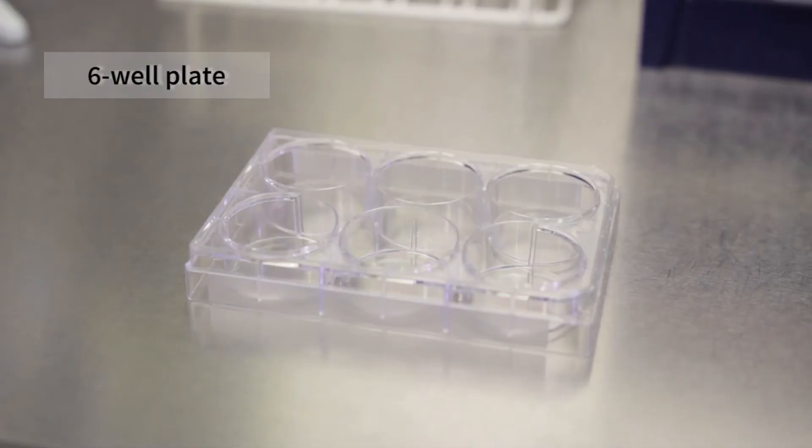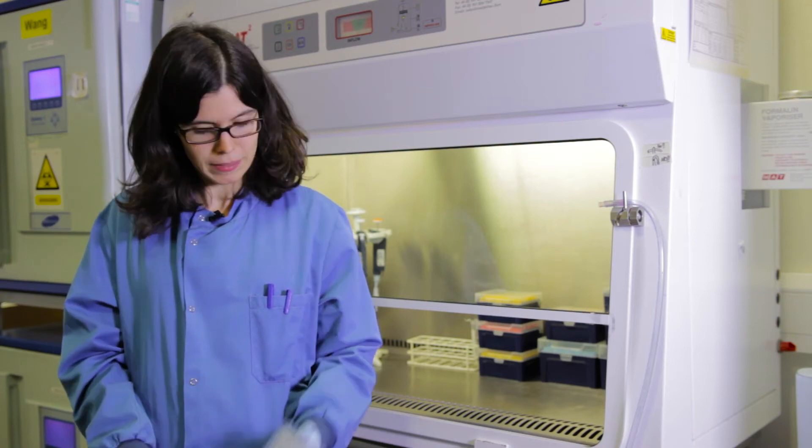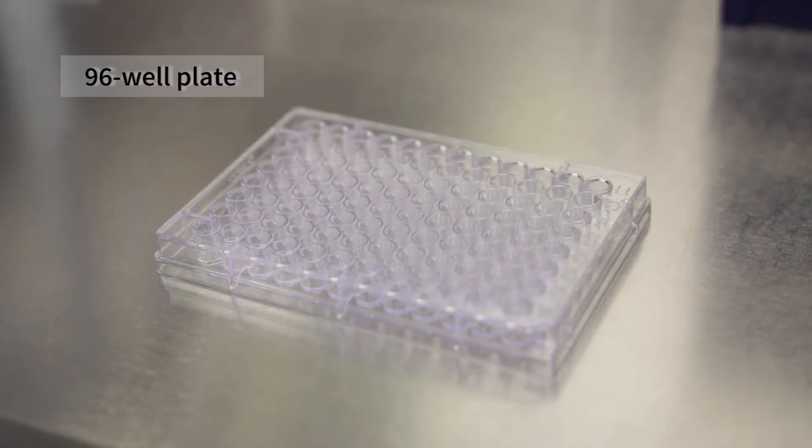The way we seed the cells depends on the type of assay we want to perform. This is a six-well plate. We use it to grow cells for preparing samples for western blot, for example. This is a 96-well plate and it is commonly used for cell viability assay. Now I will show you how to seed cells for a cell viability assay.